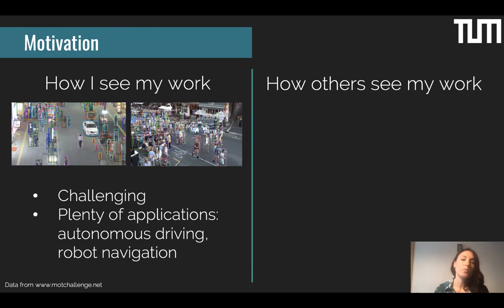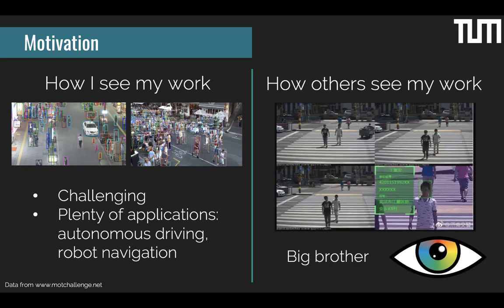But when I explain the work to people outside of the computer vision community, they see it in a completely different way. They think that multiple object tracking, and in particular multiple people tracking, is more related to the concept of Big Brother — the concept of following people, identifying them, and trying to find what they do on an everyday basis in order to essentially surveil them.